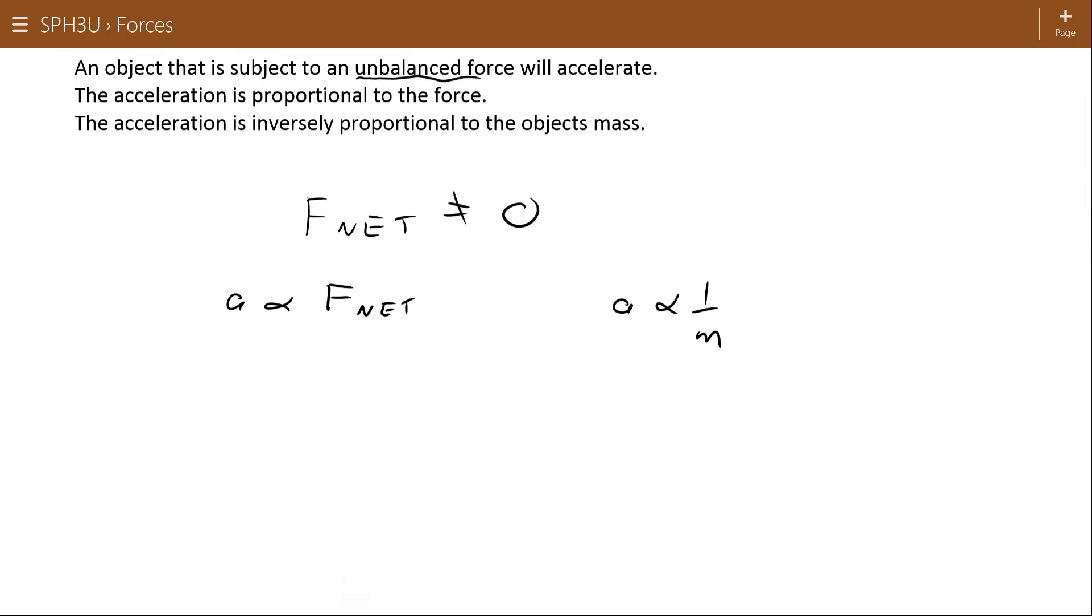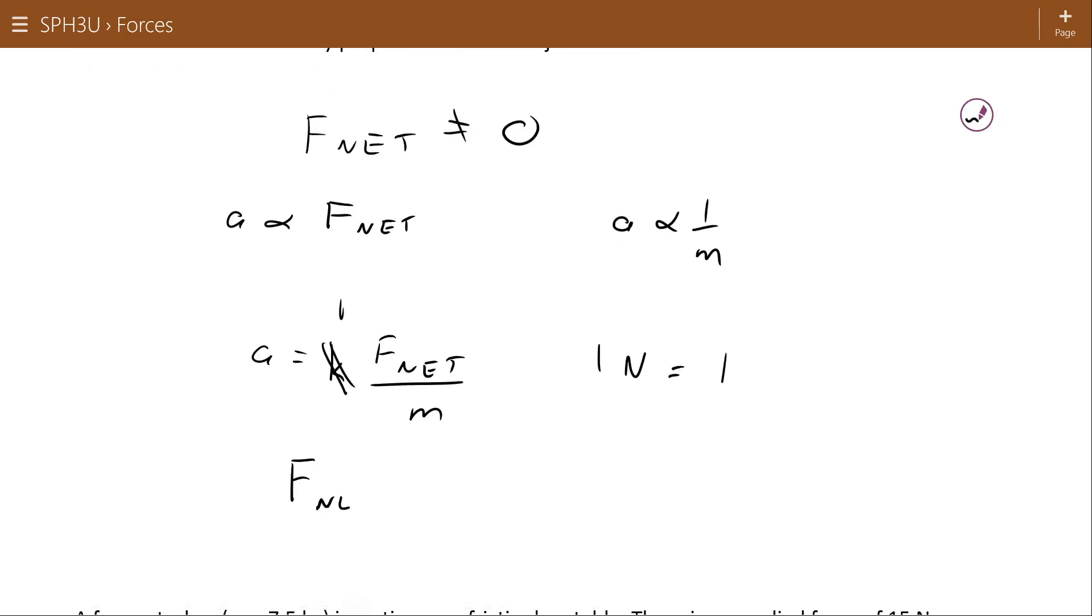Now combining those into an equation, A equals F net over M. Usually there would be a constant in this kind of equation, but that constant is set to one. And that's based on the unit Newton. One Newton is equal to, if I rearrange this formula, F net equals MA.